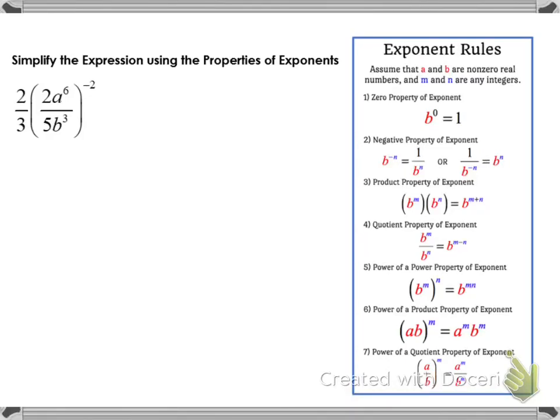In this example we are going to look at how we will simplify the expression using the properties of exponents. In our expression we have the fraction two-thirds being multiplied by the quotient of 2a to the sixth power over 5b to the third power, and that quotient is being raised to the power of negative 2. We're going to use a combination of our exponent rules to simplify this expression.